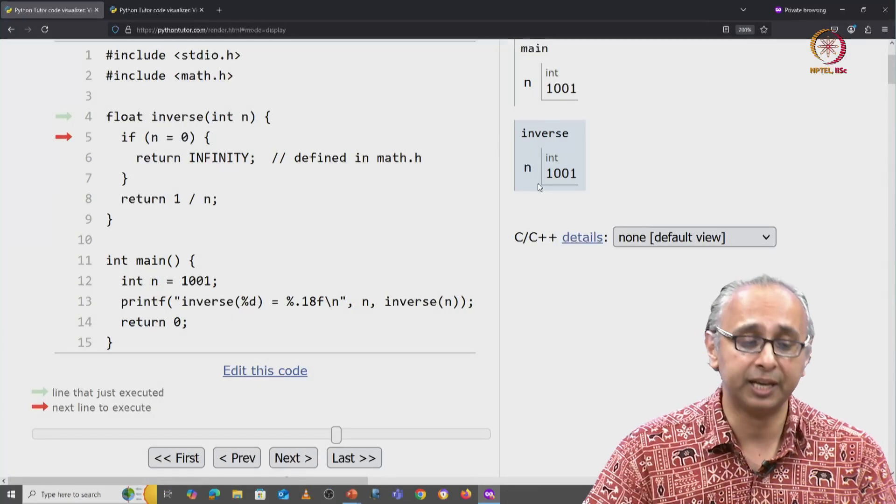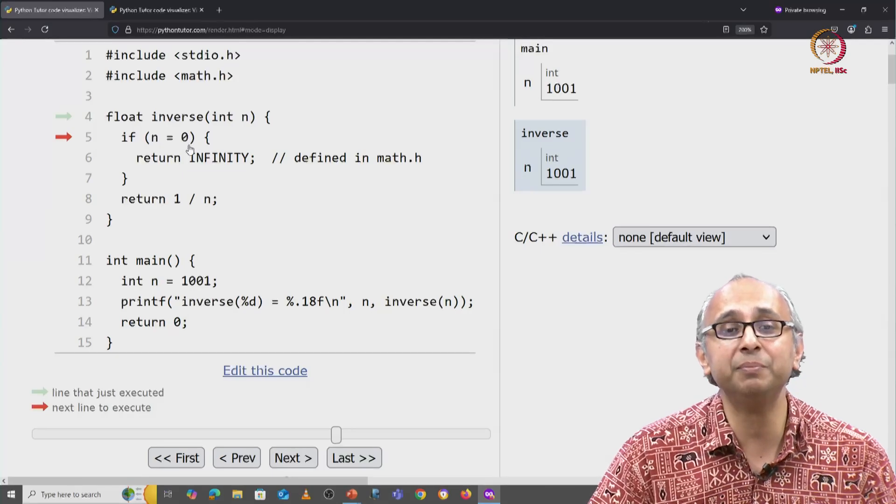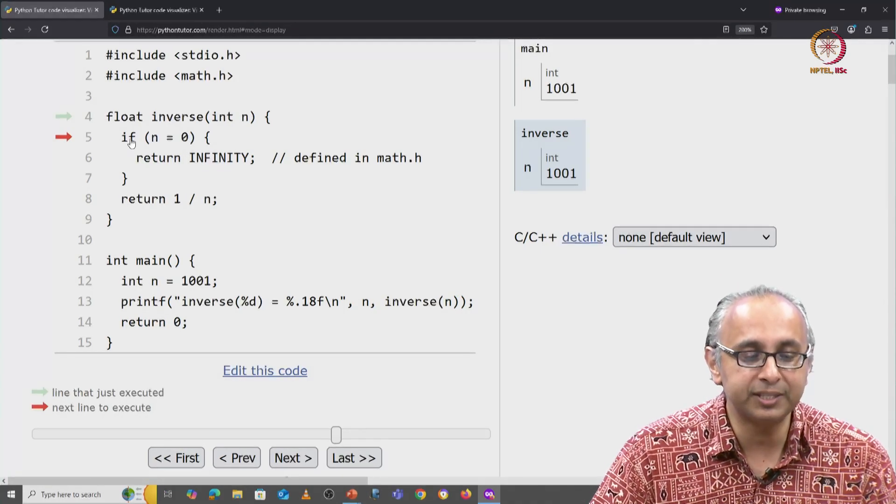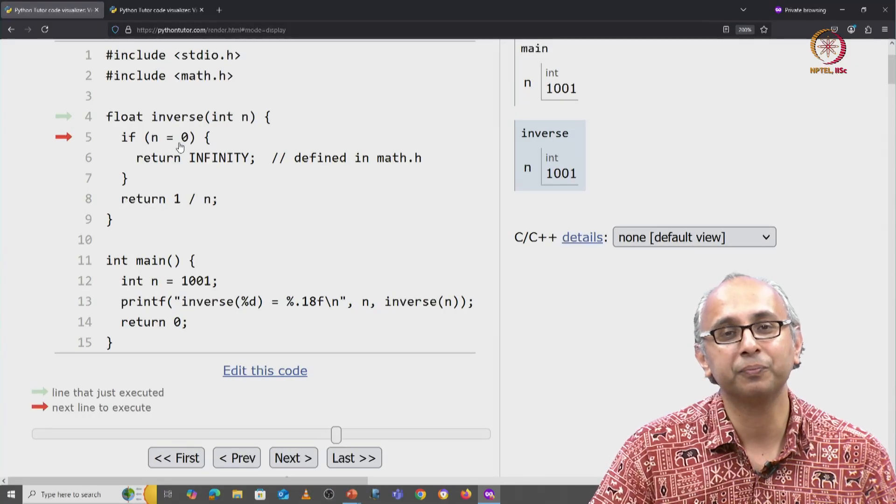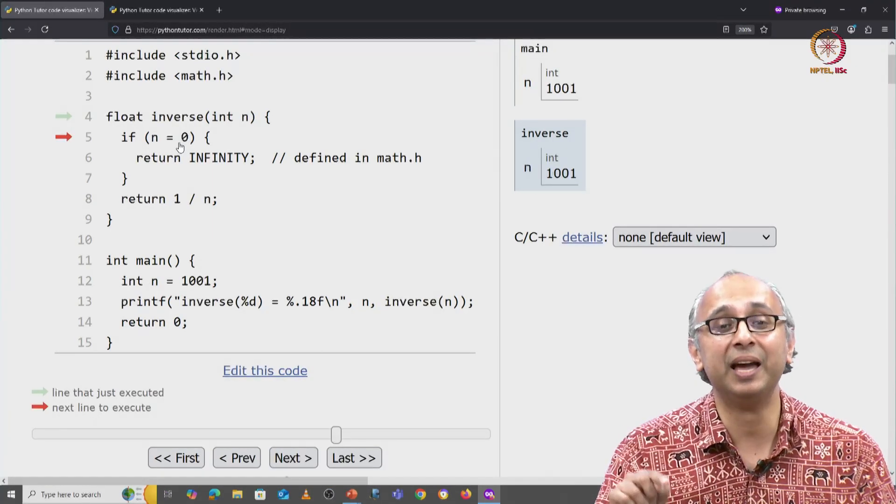So it has a value. It has the value equal to the right hand side. So this assignment evaluates to 0. So, it's as if we said if 0 and here we have a similarity between C and Python.